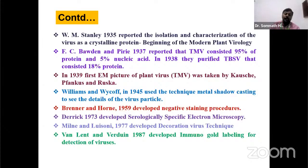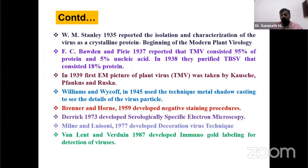In 1937, FC Bawden and Pirie reported that tobacco mosaic virus consists of 90 percent protein, showing that viruses are encased in a protective coat of proteins with maximum volume shared by coat protein, while only five percent is nucleic acid. However, the protein-to-nucleic acid ratio varies with different viruses; for example, tomato bushy stunt virus consisted of 18 percent protein. In 1939, the first electron microscope picture of a plant virus was taken by Kausche, Pfankuch, and Ruska.